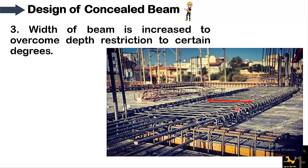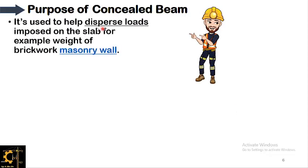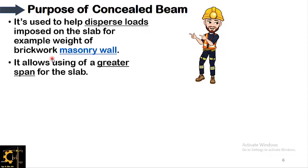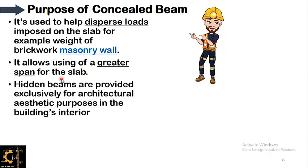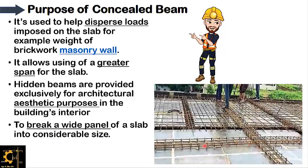These were the few points to be considered during the designing of the concealed beam. The purposes of concealed beam are: first, it is used to help disperse loads imposed on the slab, for example the weight of brick masonry wall, as it is provided on a suspended slab to carry the load of brick masonry, stone masonry, or block masonry over it. Second, it allows using a greater span for the slab and is provided for architectural and aesthetic purposes to break a wide panel of a slab into a considerable size.